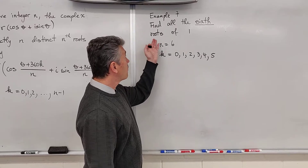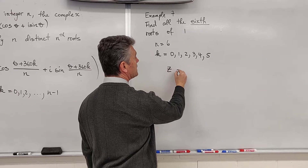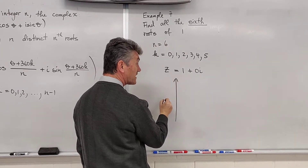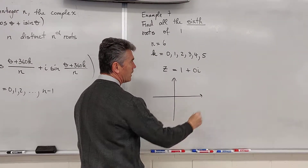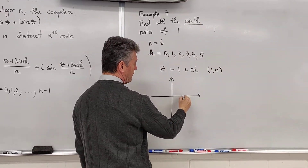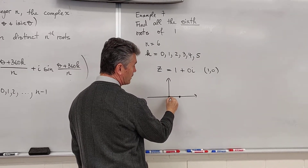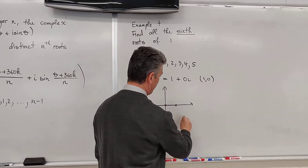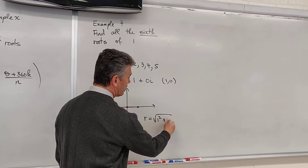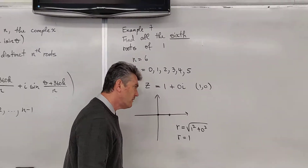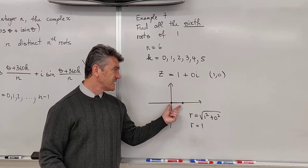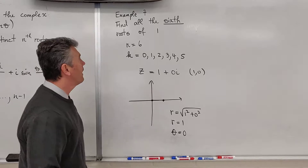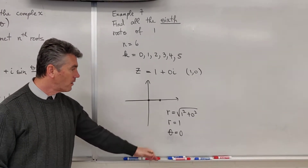We know what z is because we are trying to find the six roots of 1. So z is equal to 1 plus 0i. We plot z — we plot the point (1, 0). We now draw the segment from the origin to the point (1, 0). r is the square root of 1 squared plus 0 squared, so r equals 1. The angle between the segment and the x-axis is equal to 0, so no formula is needed: theta is equal to 0.